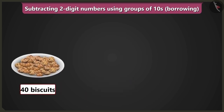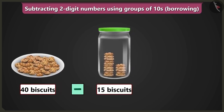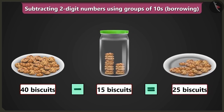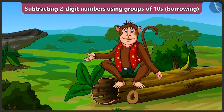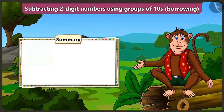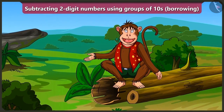Yes, in this way if we fill the jar with 15 biscuits, then 25 biscuits would remain in this plate. Well done, Bubbly — you have subtracted without even writing! You explained it to me very well, Mummy. Friends, today we learned subtraction of two-digit numbers by borrowing without writing with the help of Bubbly's abacus. In the next video, we will learn to trace some of the things in our surroundings. Thanks, bye!